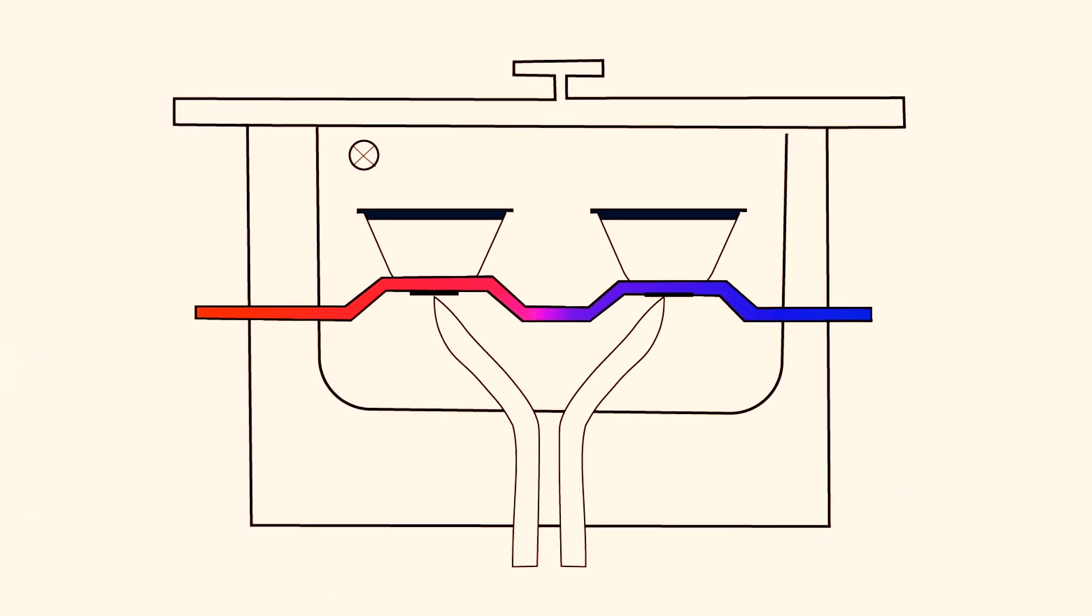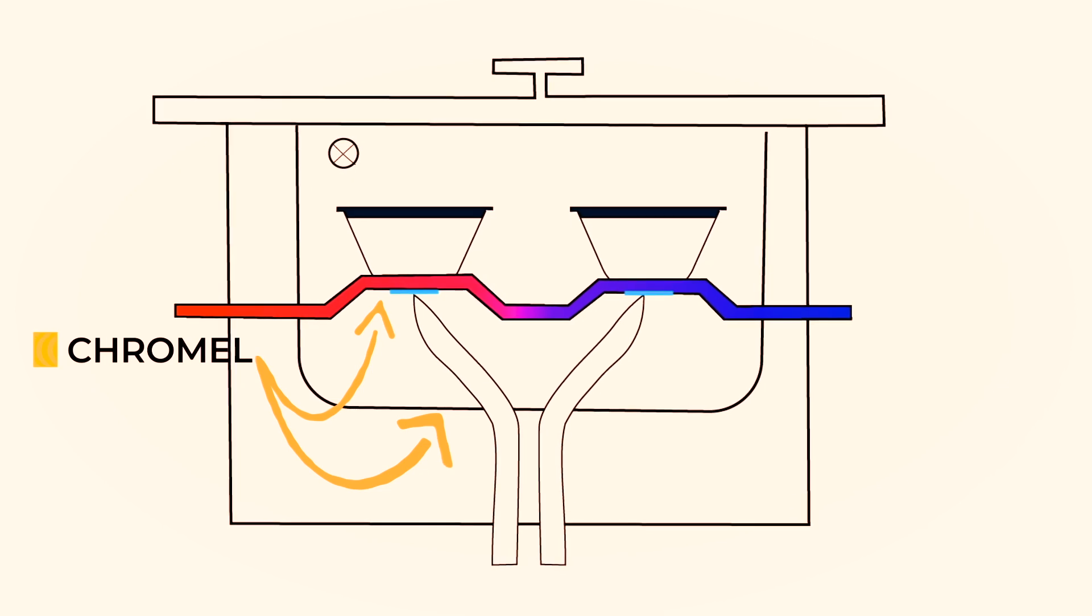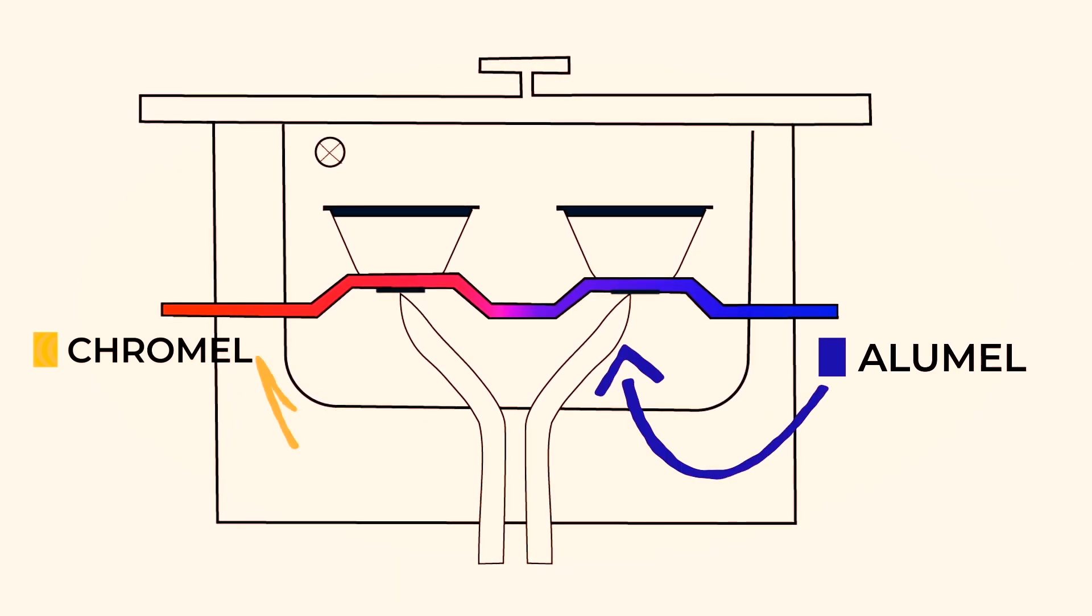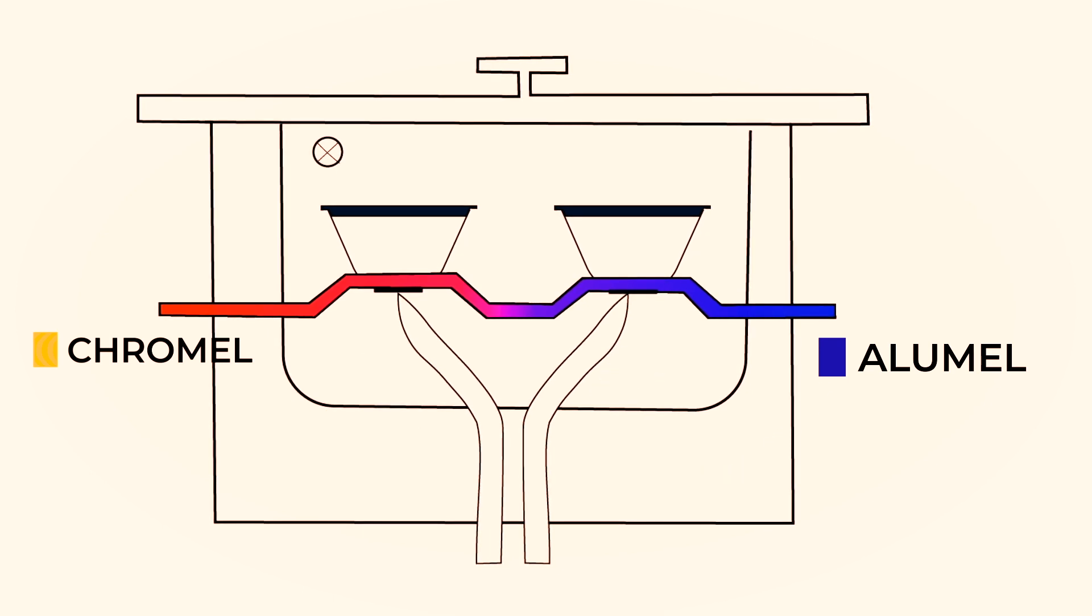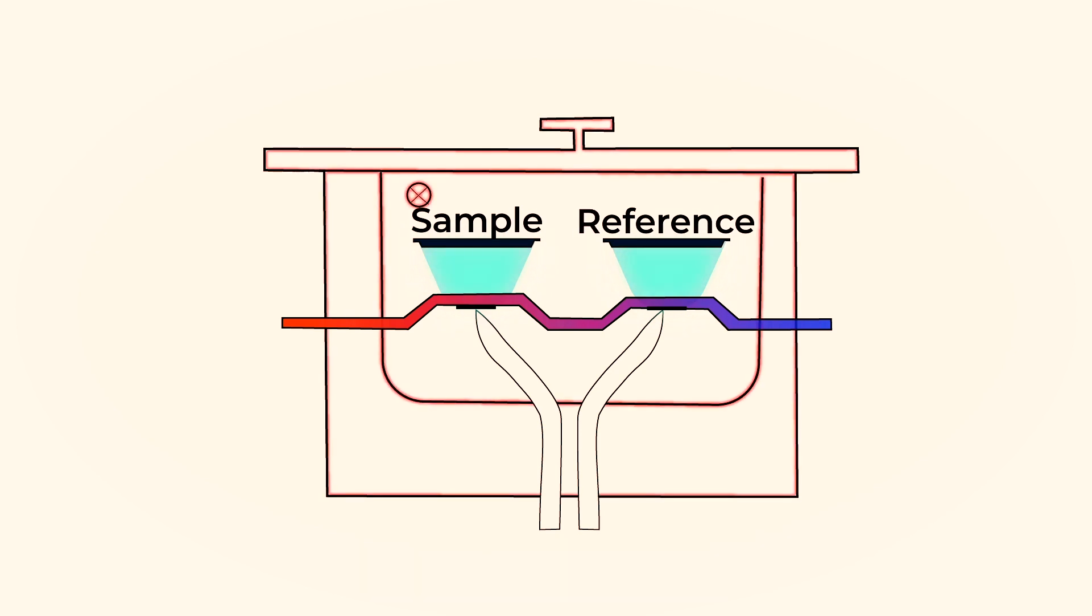The temperature sensors are disk shaped chromel-constantan area thermocouples and chromel-alumel thermocouples that are placed just below the disk. At the start the sample and pans are in equilibrium. As the block is heated the sample and reference also start to get heated. Both these will lag behind the block temperature to a different extent since the heat capacity of the sample is more due to a higher mass.